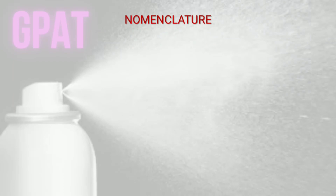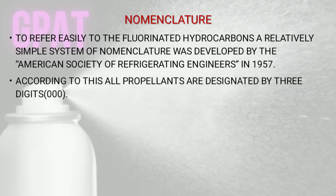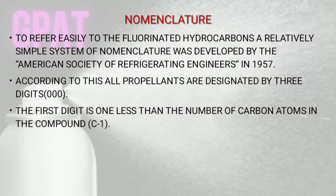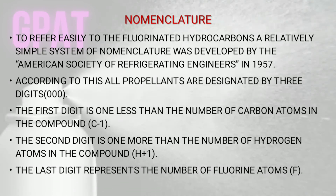Regarding the nomenclature of propellants: to refer easily to fluorinated hydrocarbons, a relatively simple system of nomenclature was developed by the American Society of Refrigerating Engineers in 1957. According to this system, all propellants are designated by three digits. The first digit is 1 less than the number of carbon atoms (C minus 1). The second digit is 1 more than the number of hydrogen atoms (H plus 1). The last digit represents the number of fluorine atoms (F).